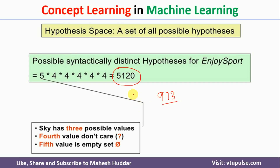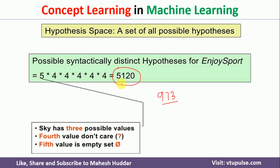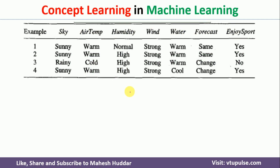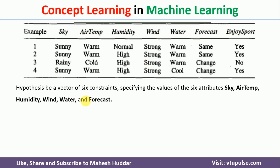We have understood how to write the concept space and hypothesis space. The main task of concept learning is to find one hypothesis which will represent this set of examples — that is the searching problem. We have to go through hypotheses one by one. With 5120 total, we need to start with one hypothesis at a time. I will consider the first hypothesis: sunny, warm, normal, strong, warm, same.